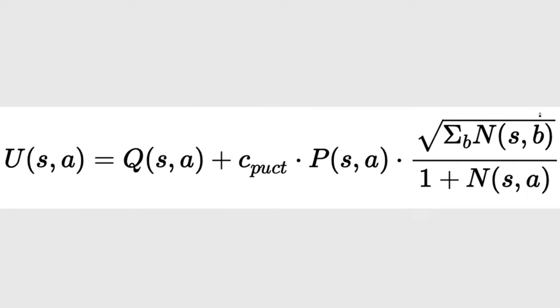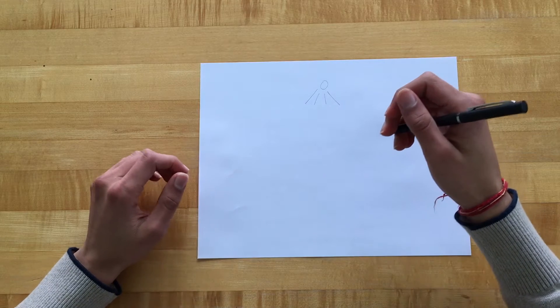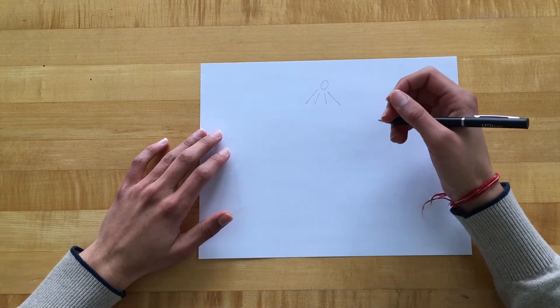And then this is a term which basically looks at how neglected a certain action was. So it sums up the amount of times that the state has been visited and then divides it by the amount of times the state-action pair has been visited. So the less the state-action pair has been visited compared to the state, the higher this number ends up being. So the higher the probability that the model will choose to take this action. Then the model takes the action with the highest upper confidence bound.